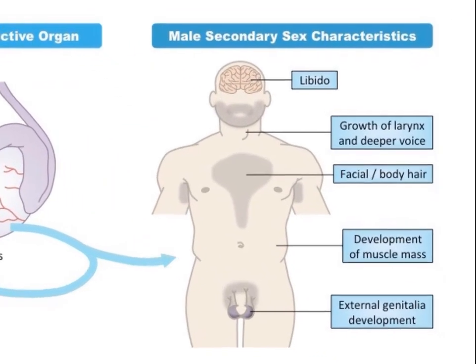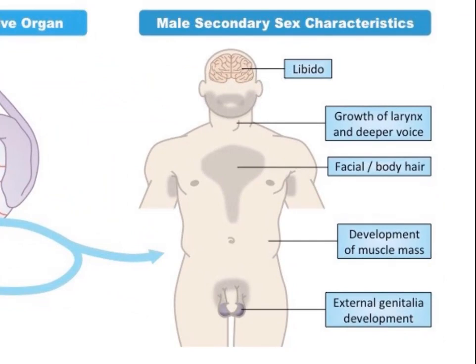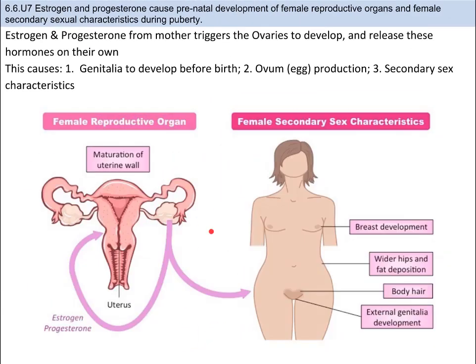Testosterone causes the male genitalia to develop in prenatal development, which means before birth. Once the onset of puberty begins, testosterone is also involved in the production of sperm in the testes, as well as secondary sex characteristics. These secondary sex characteristics include body and facial hair, pubic hair, increased muscle mass, deepening of voice, and continued external genitalia development. In females, there's no Y chromosome — it's only XX — and therefore there's no SRY or TDF protein. So in the absence of testosterone, the mother's ovaries and placenta produce the hormones estrogen and progesterone for the embryonic female, which triggers the ovaries to develop.